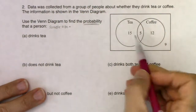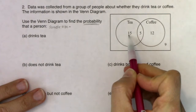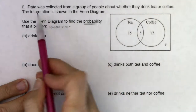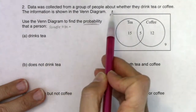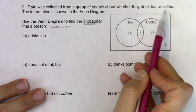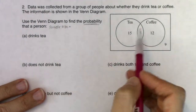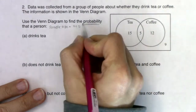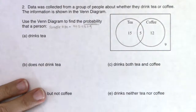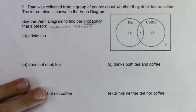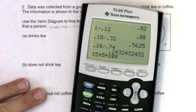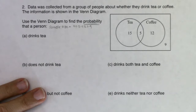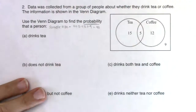I've got my four areas of the Venn diagram: those that just drank tea, those that just drank coffee, those that drank both, and neither. Data was collected from a group of people about whether they drink tea or coffee, as shown in the Venn diagram. So I have the four areas of 15, 5, 12, and 9. Adding those four numbers up, I get 41 people in my sample. My sample size is 41.